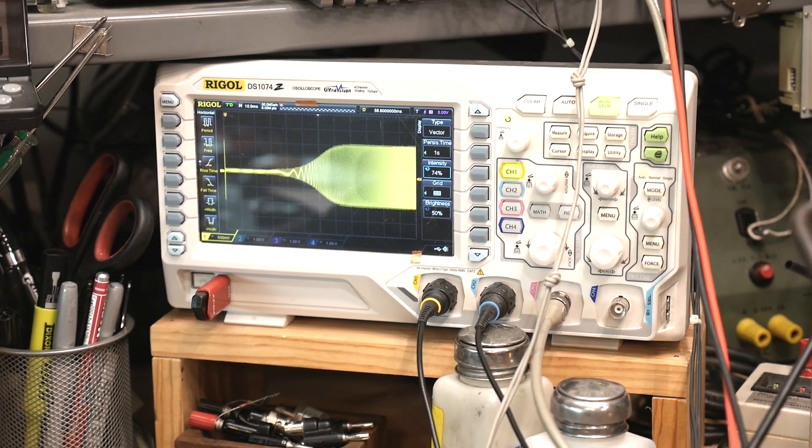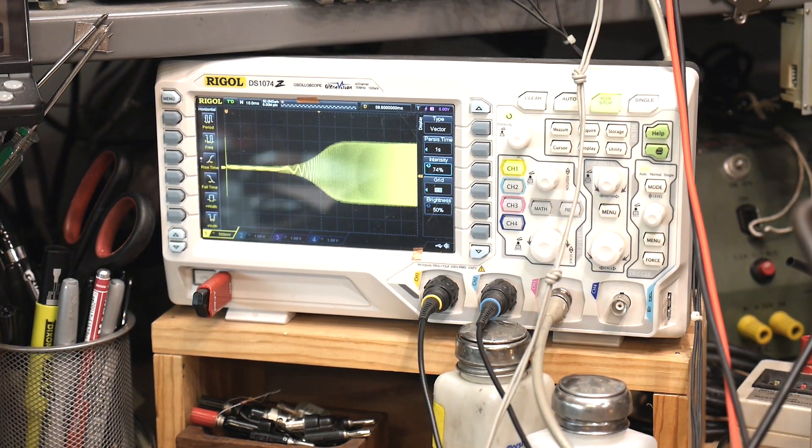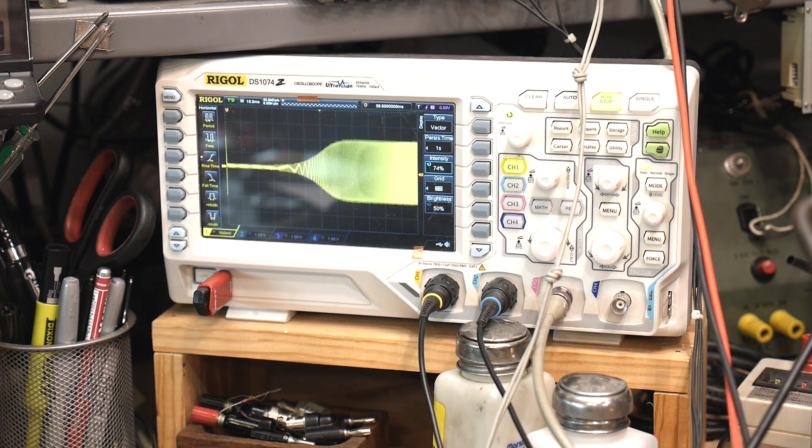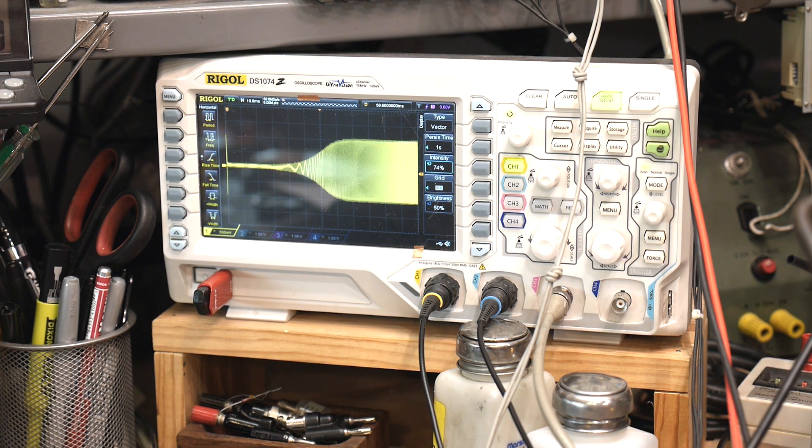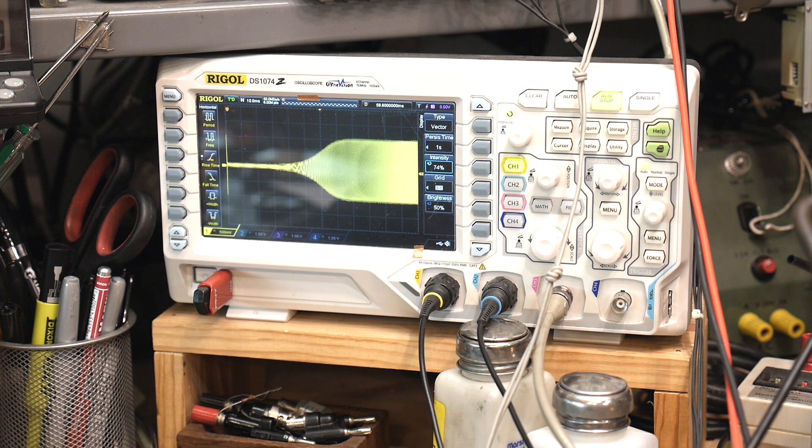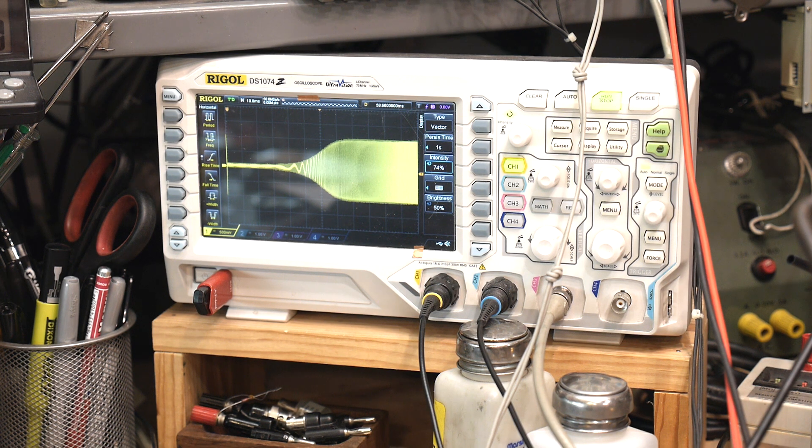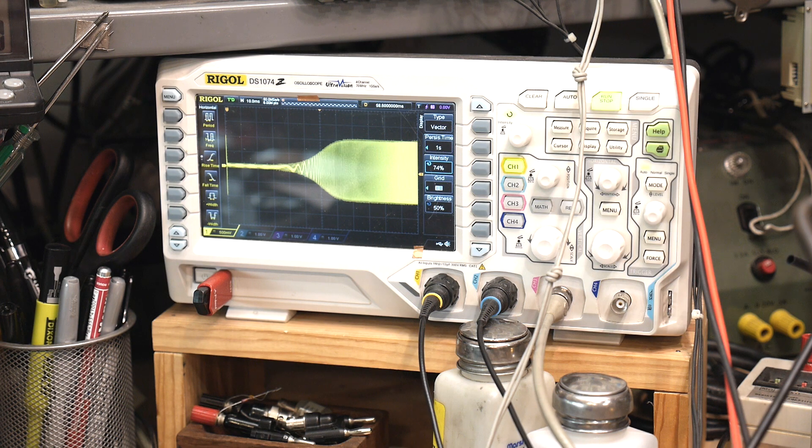And we have a high-pass filter. And the high-pass filter, about the 50% intensity is right at one kilohertz. So that's again, everything is 10k, 10k, and 0.01.